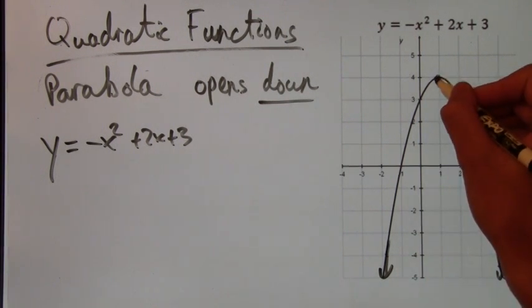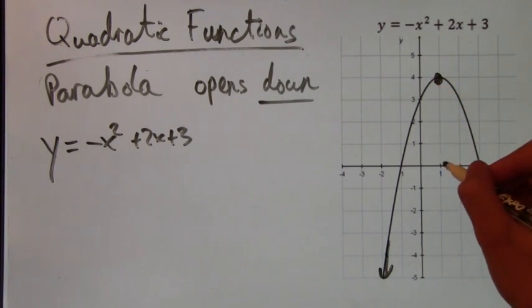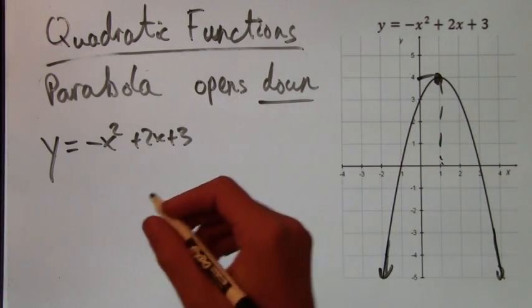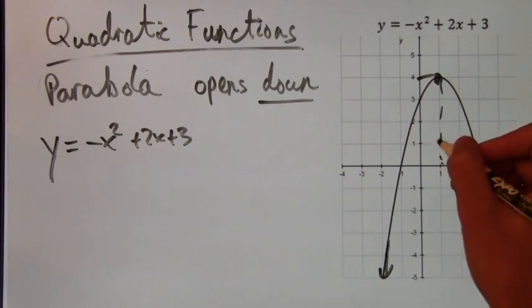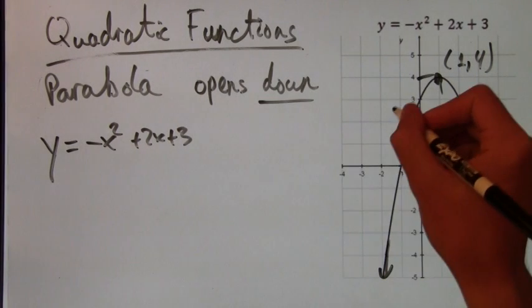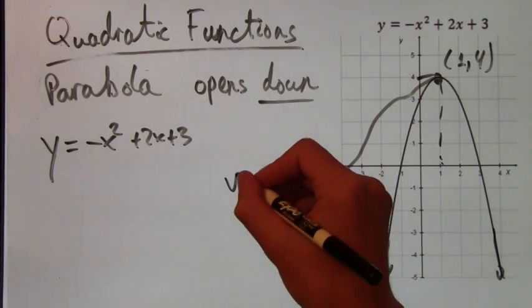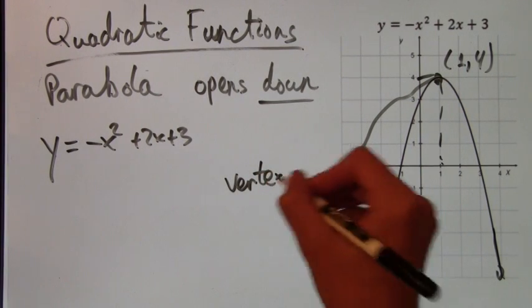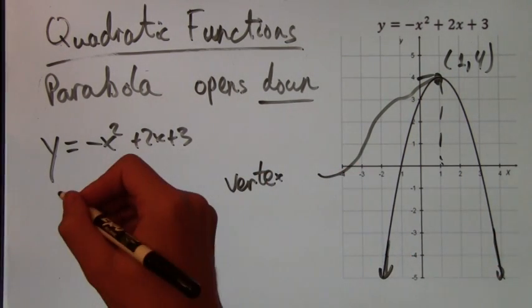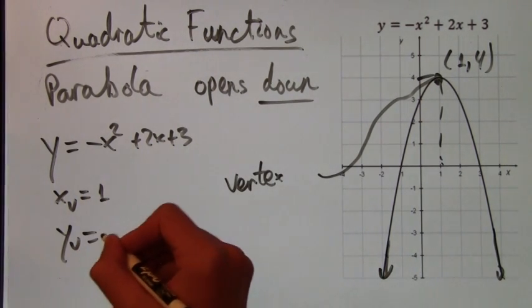And we have a vertex again. It's the point where the parabola turns around. This time, the coordinates of the vertex are 1, 4. So the x-coordinate of the vertex is 1, and the y-coordinate is 4.